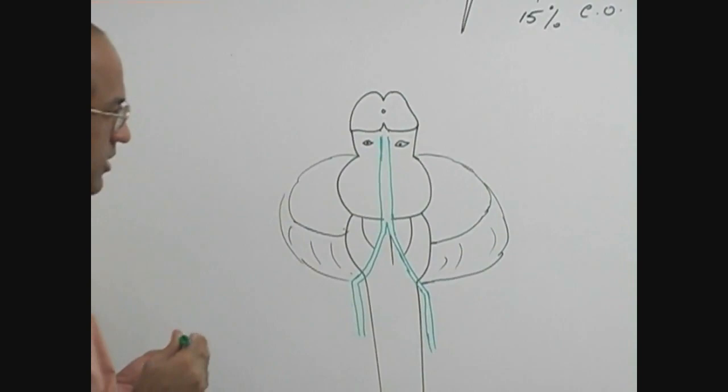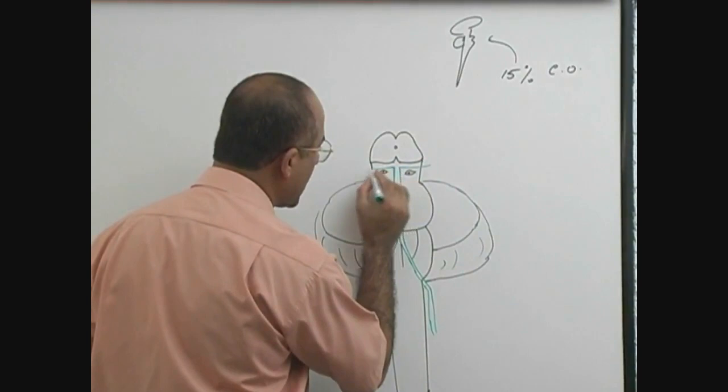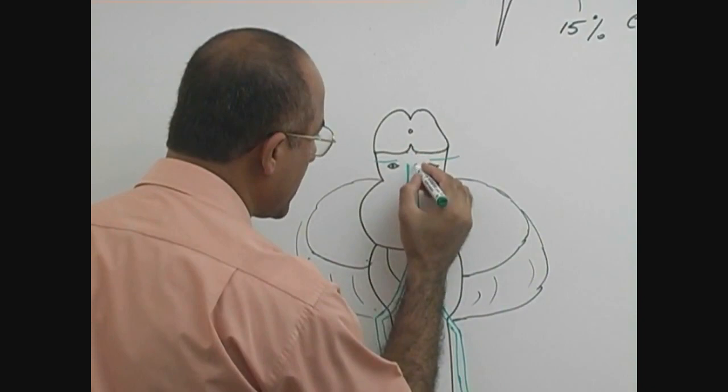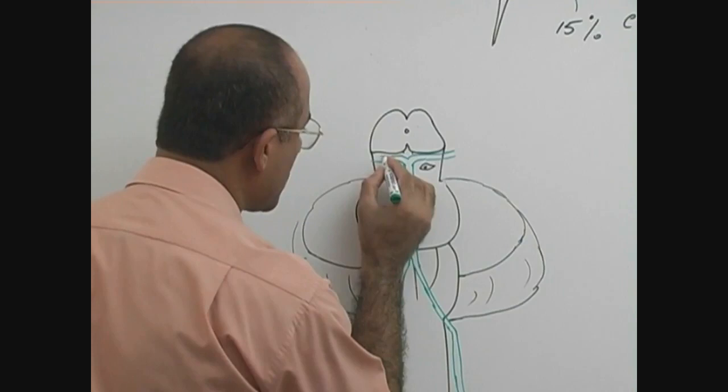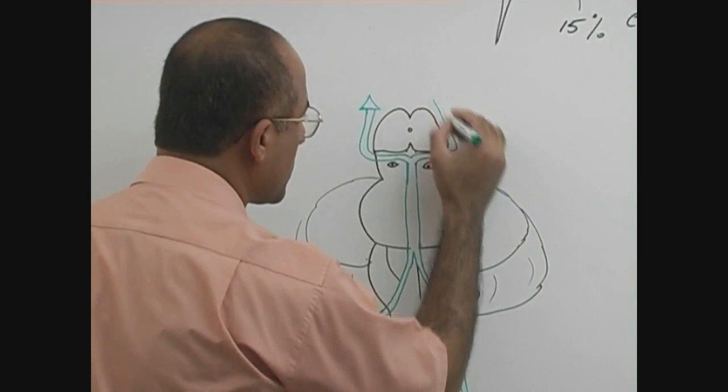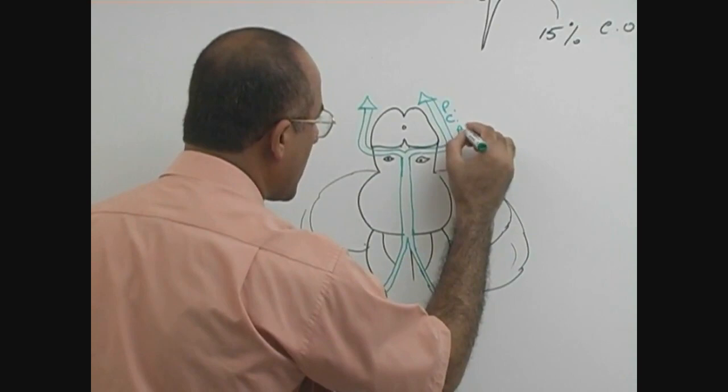And then what really happens? At this point, this basilar artery divides into terminal branches. And these terminal branches, what are they called? These are going posteriorly, they are headed backward. So they are going posteriorly and we call them posterior cerebral arteries.